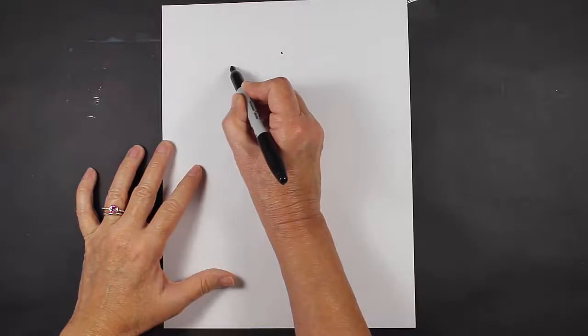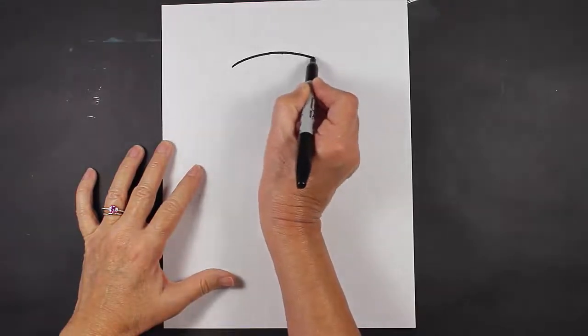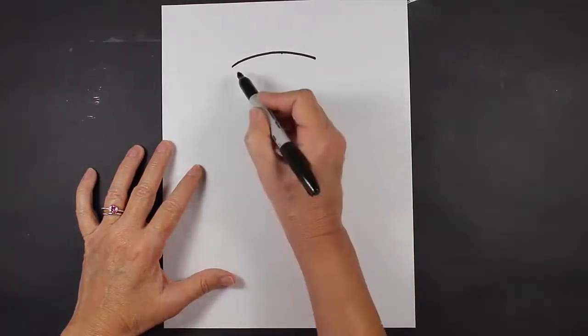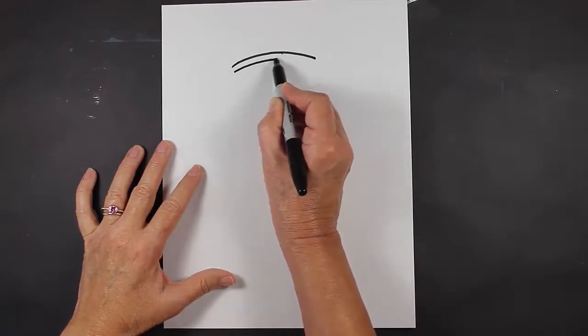Today we will be making a scarecrow, so let's get started. The first thing we'll want to do is make a curved line. Right underneath that curved line, we're going to make another curved line.